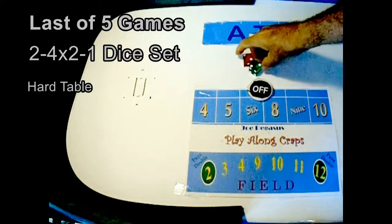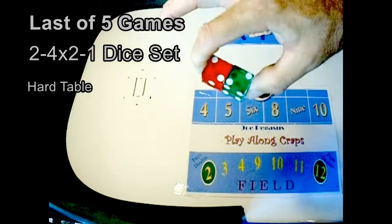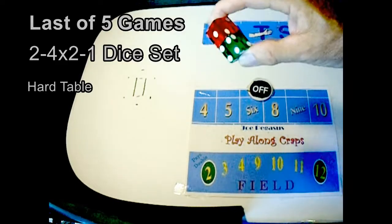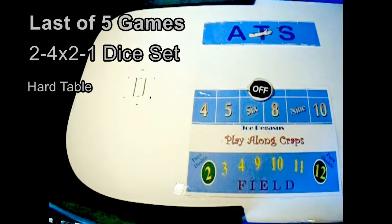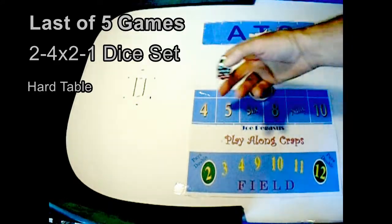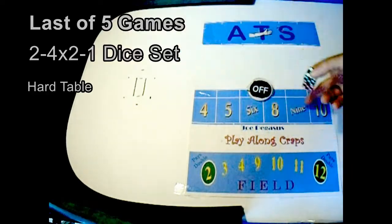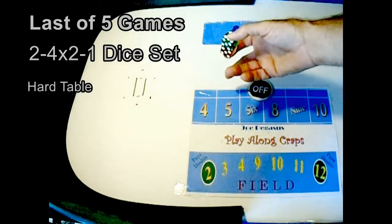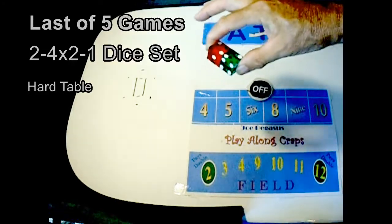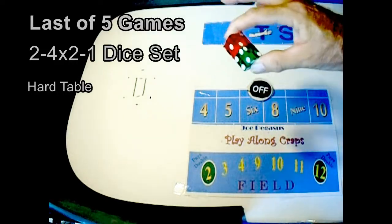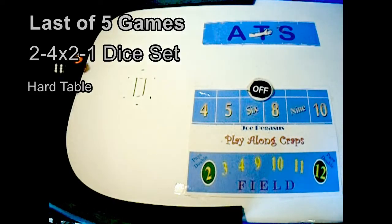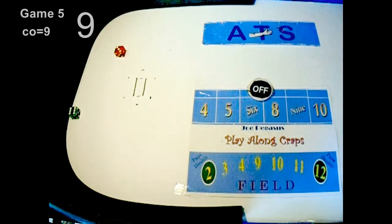This will be the last game, fifth game of the two four two one dice set on a hard table. It's an okay set, let's put it that way. It makes your money, not a lot of money, doesn't throw too many numbers. A couple of hard ways, not too bad with the hard ways, and not too bad with the fours and tens. If you're going to lay the fours and tens, just buy them. I know I'm here only to throw the dice, and that's what I'm going to do right now.